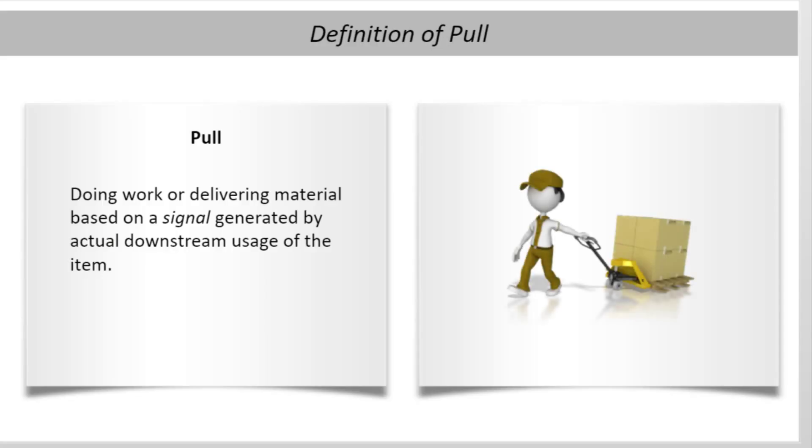Here is the definition of pull, or what a pull signal means. When work or materials are being pulled, you can't actually move the work or the material forward until there's a signal to do so, like an empty space, an empty container, or a physical card. This method eliminates the possibility of inventory accumulating between steps,